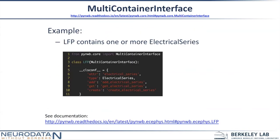LFP is the simple canonical example. An LFP contains lots of ElectricalSeries, and you may want all the methods for adding ElectricalSeries objects to this container. Instead of writing those by hand, you can just define this class property called __clsconf__ and it will auto-generate these methods for you.